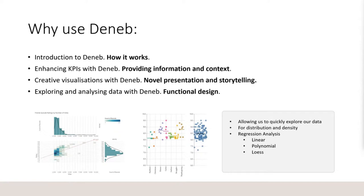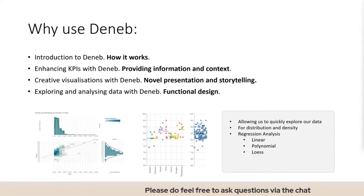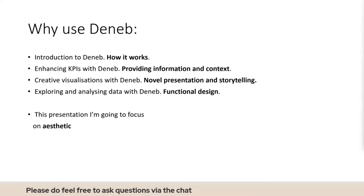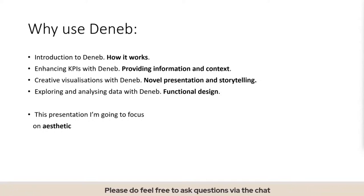Other presentations also demonstrated how Deneb can be used for quick data exploration and statistical analysis using the statistical API. We can use this to perform various types of regression such as linear regression, least ordinary squares regression, and polynomial, and we can create various types of scatter plots and heat maps to explore distributions we can't ordinarily do with standard visuals. With the statistical APIs we can return things like correlation coefficients, which I find very hard to do in Power BI with DAX.